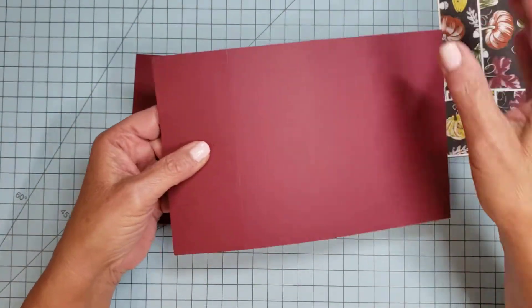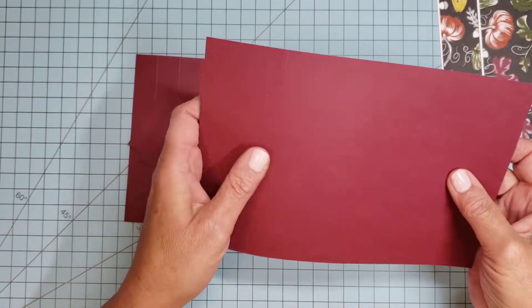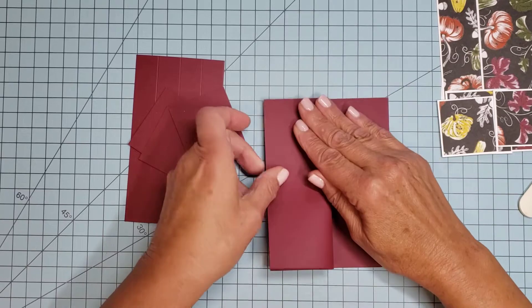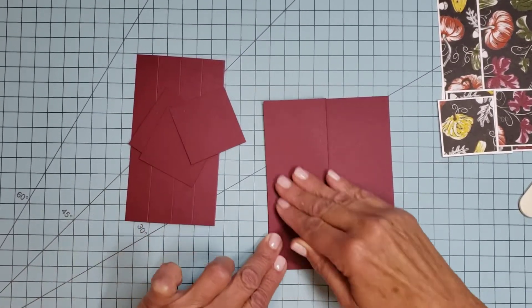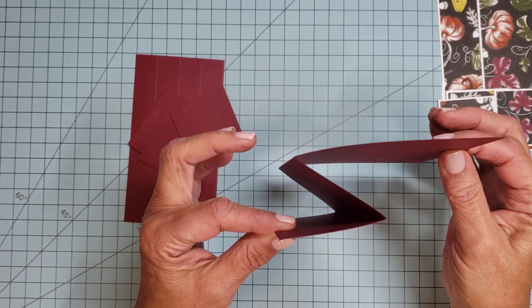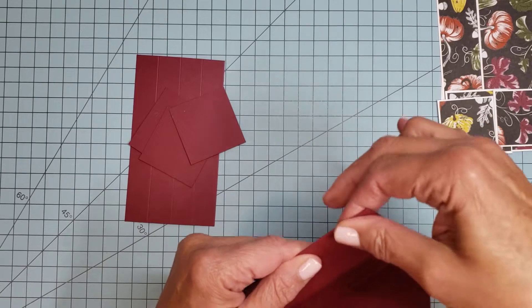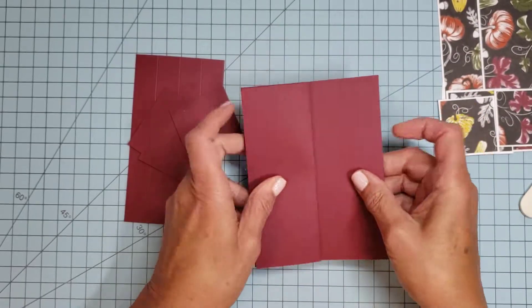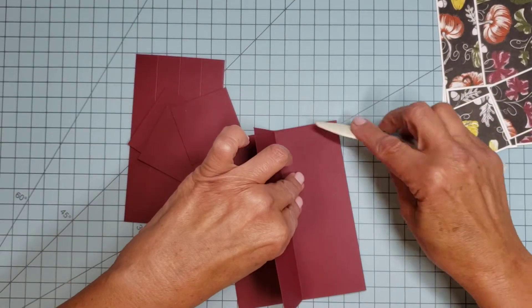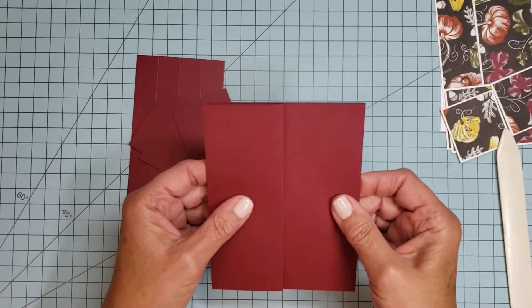The card base is 5.5 by 8.5 inches and it is scored at 2 and 1/8 inches and 4 and 1/4 inches. When you score the card base, you create an accordion fold. The top layer goes back to the left and then you fold the card in half, or you can fold the card in half first and then bring the top layer to the left. Burnish the score lines and your edges so everything is nice and crisp.